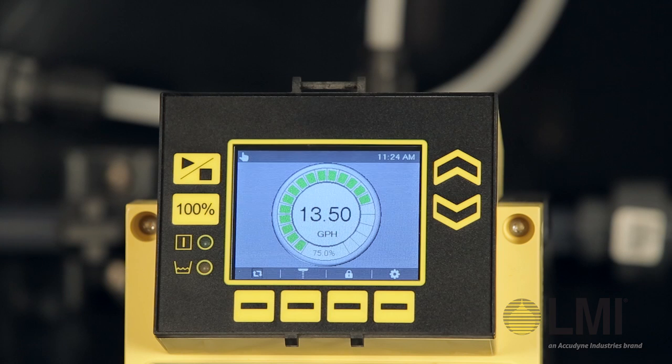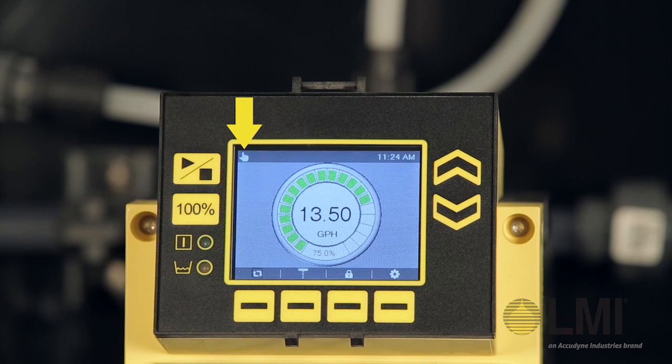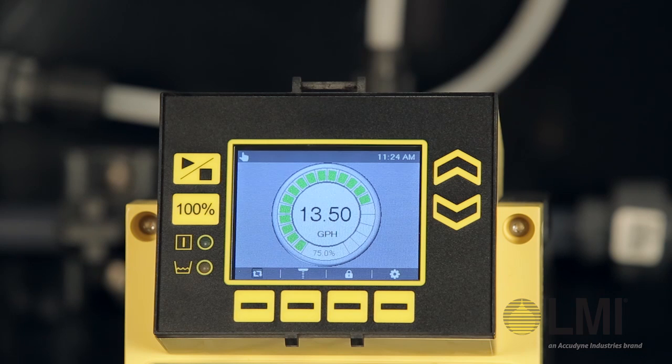In this example, we see a hand icon indicating that the pump is in manual mode. We need to change the operating mode using the context-sensitive button that corresponds to the operating mode icon at the bottom of the screen.